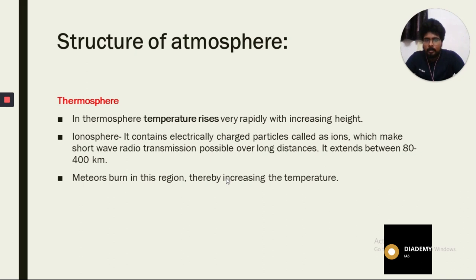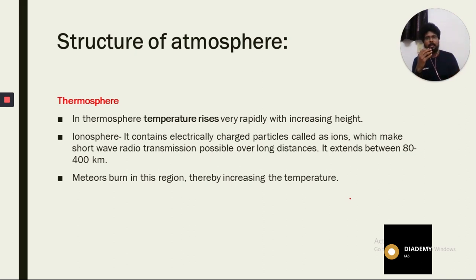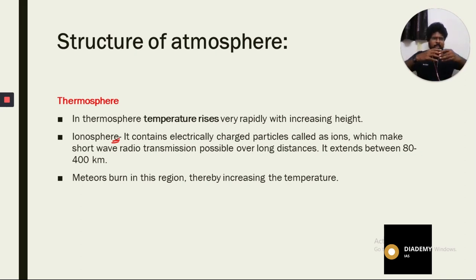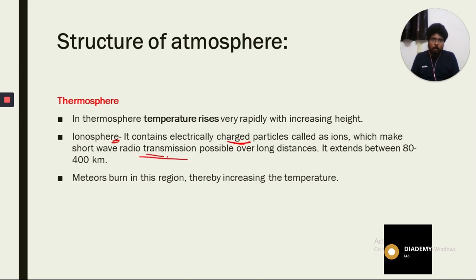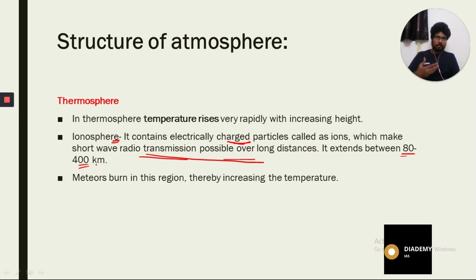In the thermosphere, temperature rises very rapidly with increasing height. Up to the mesosphere, carbon dioxide and water vapor absorb heat, limiting temperature rise. The thermosphere is also called the ionosphere because it contains various electrically charged particles called ions, which make shortwave radio transmission possible over long distances. It extends between 80 to 400 kilometers.